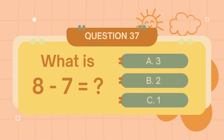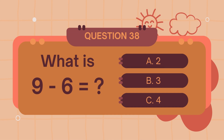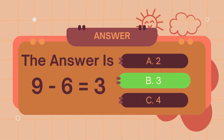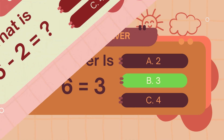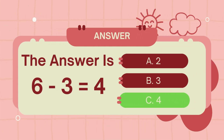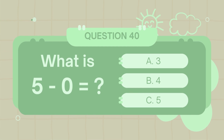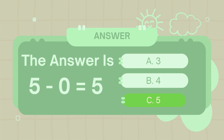What is 8 minus 7? The answer is 1. What is 9 minus 6? The answer is 6. What is 6 minus 2? The answer is 5. What is 5 minus 6? The answer is 5.